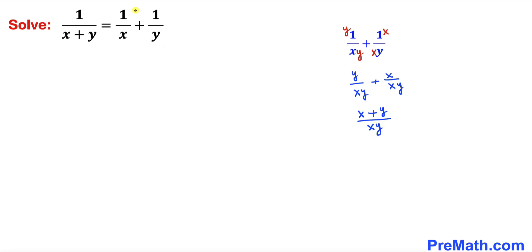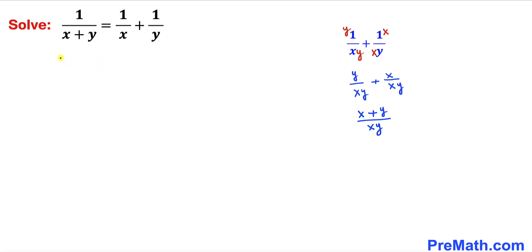So this can be written as (x plus y) all over (x times y). I am going to replace the right hand side with this, so our equation becomes: 1 divided by (x plus y) on the left, and (x plus y) divided by (x times y) on the right.